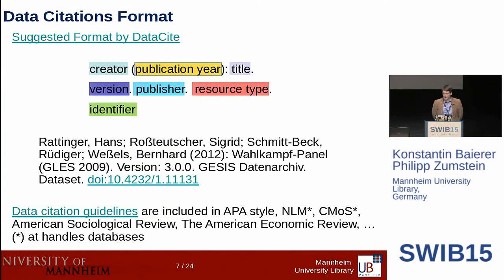That was the principle. How does a data citation look in practice? Here is one format suggested by DataCite. You start with the creator, then the publication year in parentheses, title, version, publisher, resource type, and identifier. There's an example, and you can move things around a little — publication year maybe at the end, or different separation rules. That's what citation styles are forcing you to do. There are also well-known citation styles like APA, which already has data citation guidelines included, and other examples from the NLM or the Chicago Manual, as well as some journal styles.